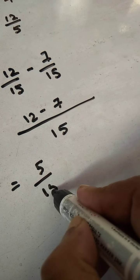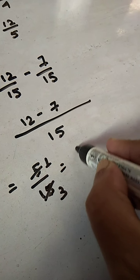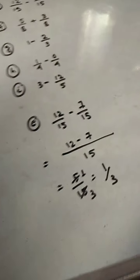5 by 15. Now, we will reduce it. 5, 1 is a 5. 5, 3 is a 15. So, 1 upon 3 is the answer.